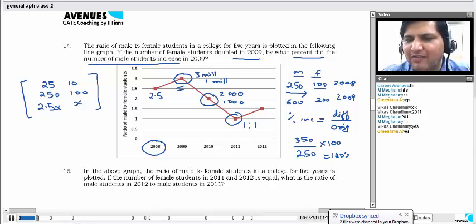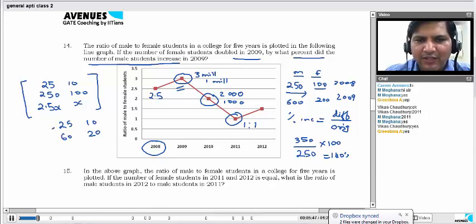Mind you, if you had taken any other value here of male, female instead of 100 and 250, you have taken it as 10 and 25. Then the next year, this would have become 20 and this would have become 60. Still, the percentage changes 140%.